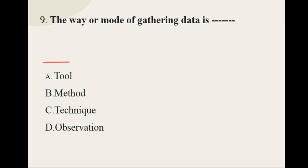Question number nine: The way or mode of gathering data is dash — options are tool, method, technique, and observation — and the correct option is method.